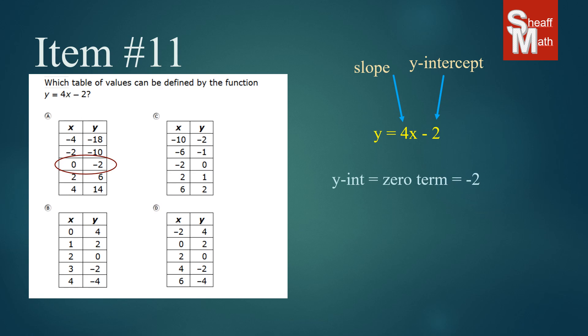If I look at B, the zero term is 4. I know that's not correct, so I'm going to put an x on that one. We can eliminate that.